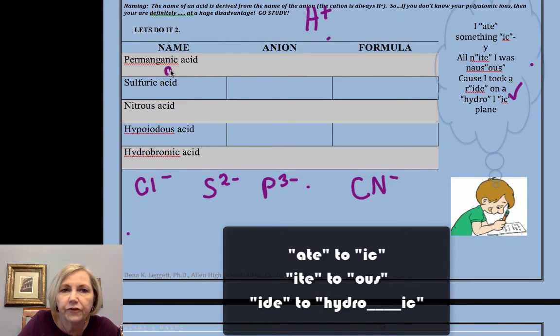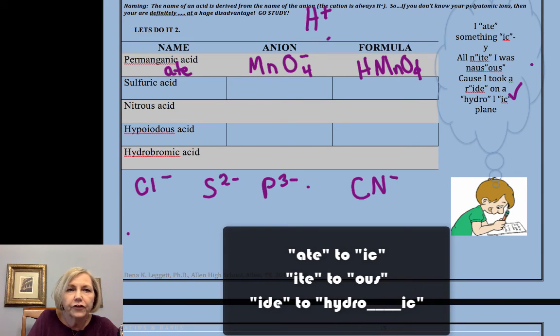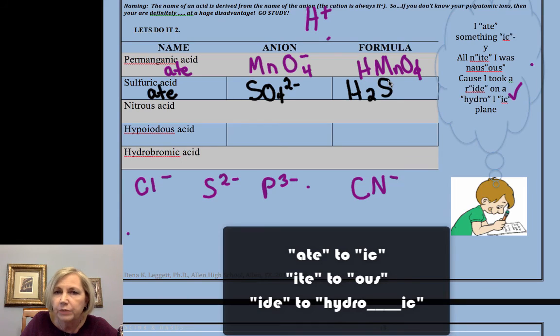So let's look. Permanganic, -ic came from -ate. Permanganate, if you don't know your polyatomic ions, you are out of luck. That's permanganate. There's one negative charge, so I need one H plus to balance that out. Sulfuric acid, -ic again came from -ate. Whether there's a per in front or not, -ate and -ic go together. Sulfate is SO4 two minus. Since there's two negatives, I now need two H pluses. So we would call this a diprotic acid because it has two protons.